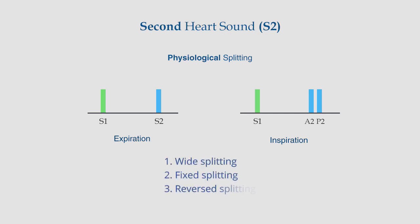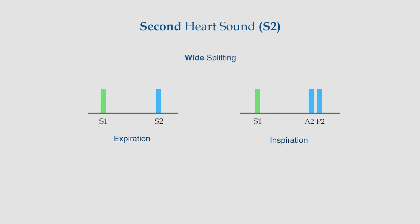Three abnormal variations in S2 splitting can be found: wide splitting, fixed splitting, and reverse splitting. Wide splitting of S2, as the name indicates, has a wider split between the A2 and P2 but with normal breathing. This occurs in conditions that further delay right ventricular emptying, such as right bundle branch block or pulmonary hypertension.